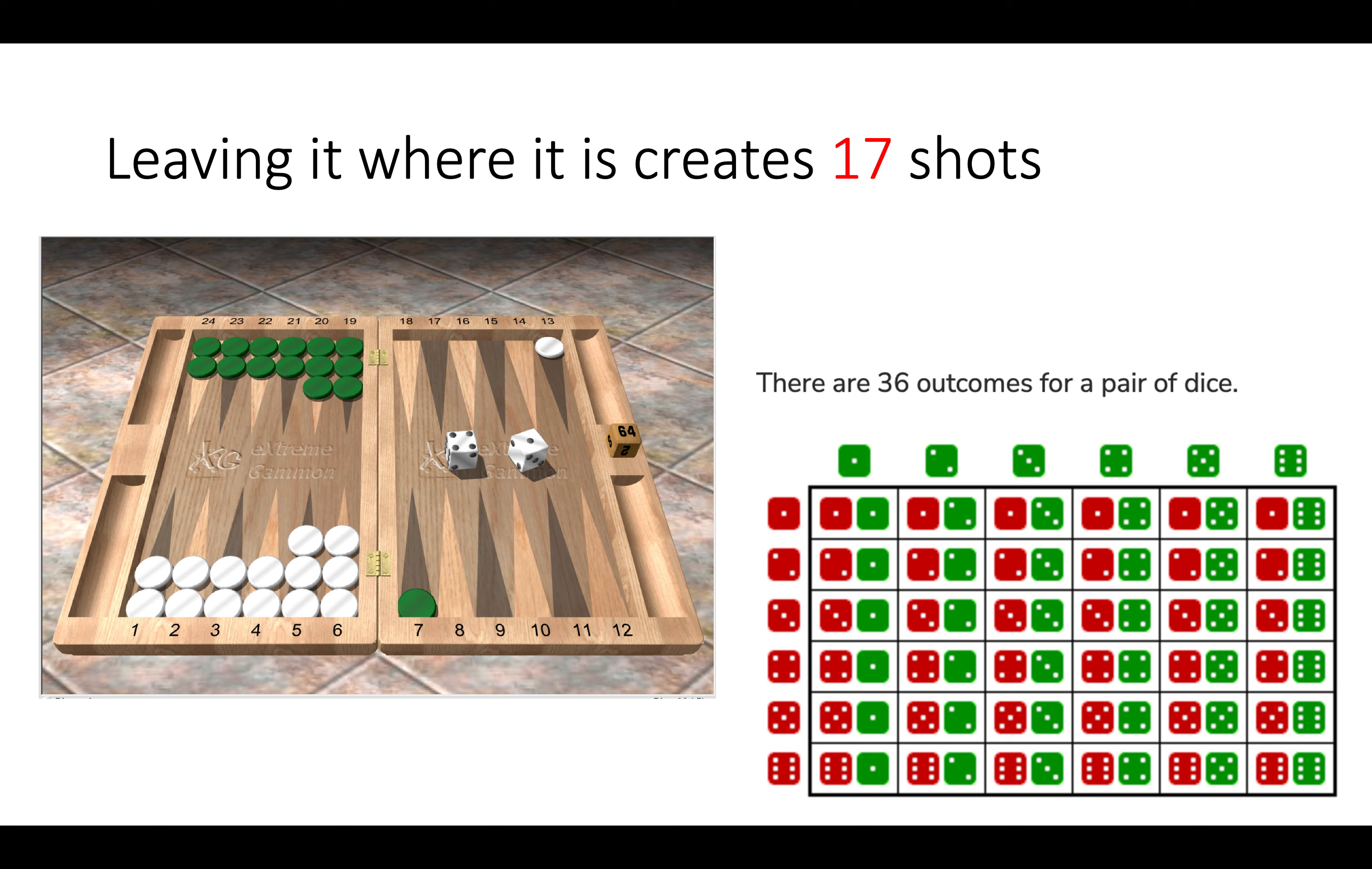So actually leaving your blot six away is the worst possible place it can be. You can see the difference from it being one space away. From it being one space away to being six spaces away, we are giving green six more rolls to hit us, which is pretty big.